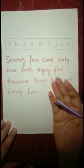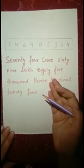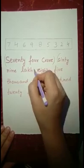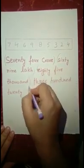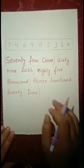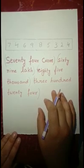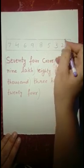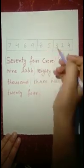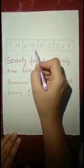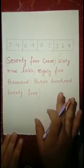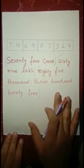According to how we read this number in words, we can divide it into groups. 74 crore is the first group, 69 lakh is the second group, 85,000 is the next group, and 324 is the last group. So starting from the right: 324, then 85, then 69, then 74.